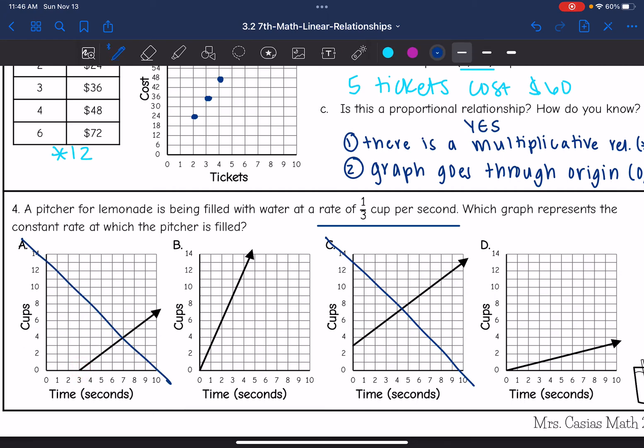So B and D both start at the origin 0, 0. So if I'm doing one third cup per second, that means that after three seconds, I would finally have one full cup. It would be one cup in three seconds.